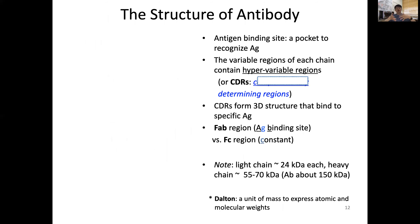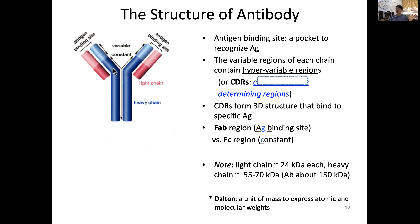Let's look more specifically at the structure of the antibody. It must have a site that recognizes and binds antigen — it has a pocket. A typical antibody has two arms, giving it a bivalence. It looks like a Y shape with four chains: two short ones called light chains and two long ones called heavy chains. The two tips are the antigen binding sites, composed of both light and heavy chains.